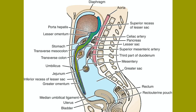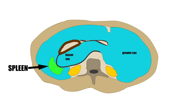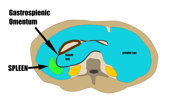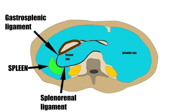The lesser sac lies behind the stomach and the lesser omentum. It extends upward to the diaphragm and downward between the layers of the greater omentum. The spleen, the gastrosplenic omentum, and the splenorenal ligament form the left margin of the sac. The right margin opens into the greater sac through the opening called the epiploic foramen.